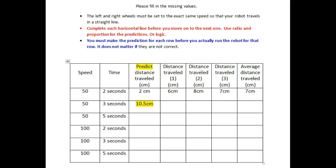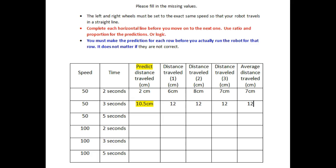Now, you are going to program your robot to go forward at the same speed of 50 for three seconds, and you are going to measure whatever it is. Say we get 12, and 12 — again, these figures are imaginary — and 12. Then we see that the average distance travelled would be 12 centimeters because they are all the same.